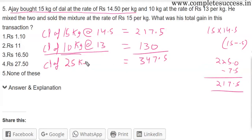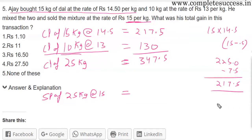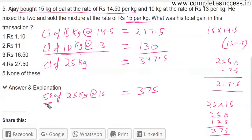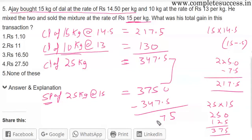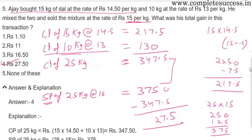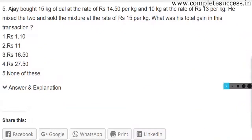He sells 25 kg at Rs.15 per kg, so the selling price is 25 into 15 equals Rs.375. The profit is 375 minus 347.5, which equals Rs.27.5. The answer is the fourth option. I hope this helps you.